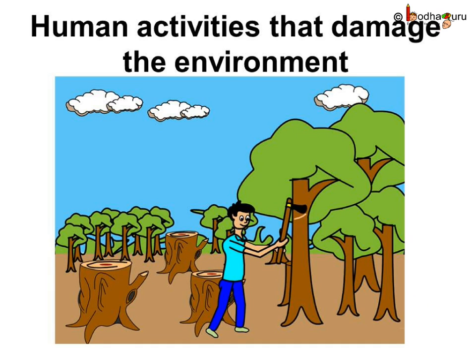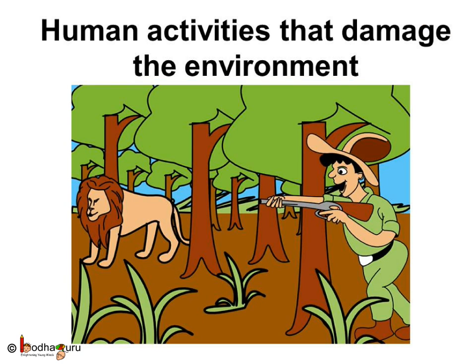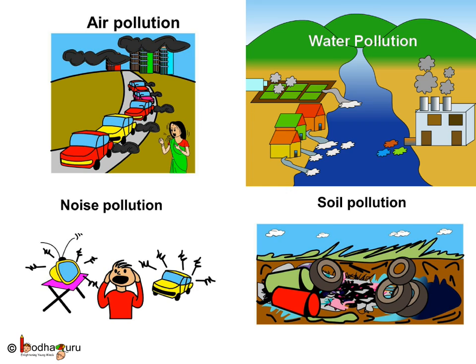Some human activities also damage the environment. Cutting down trees and clearing forests for building cities and cultivating crops damages the environment badly. One more human activity which damages the environment badly is hunting and killing of animals and marine life for food, clothing, cosmetics, etc.